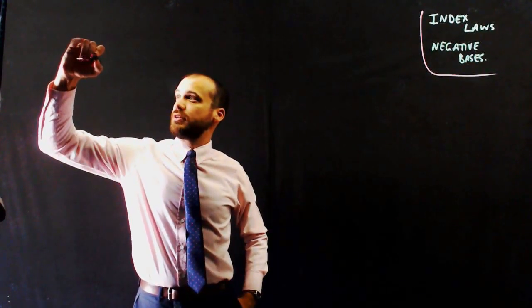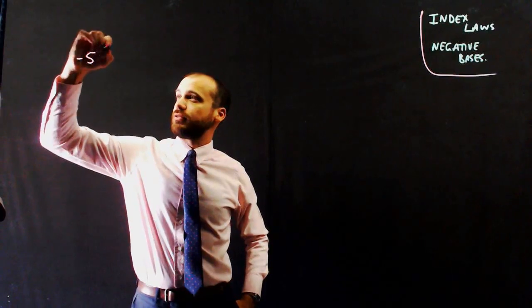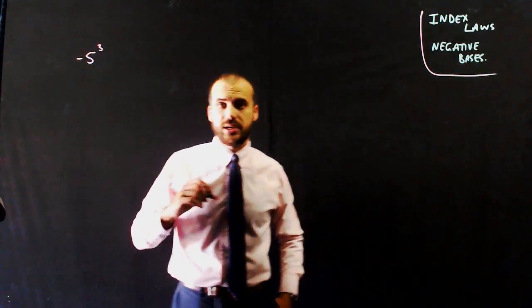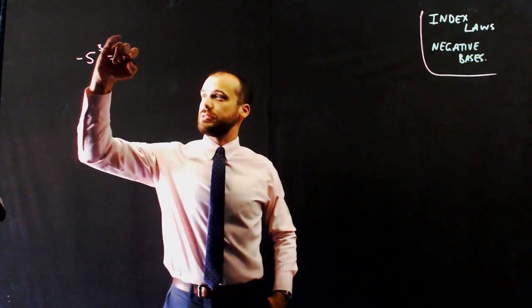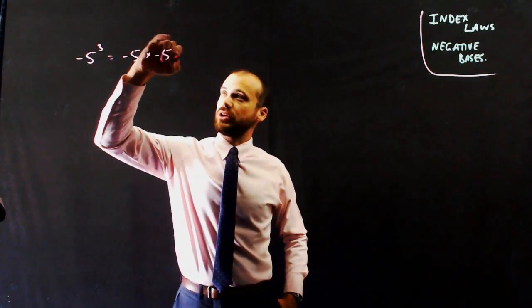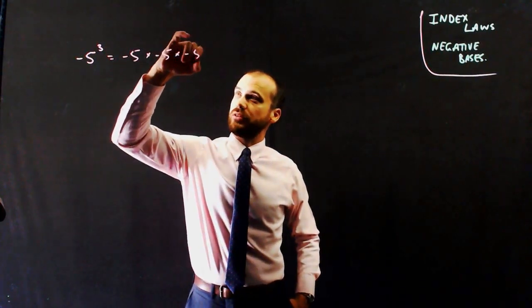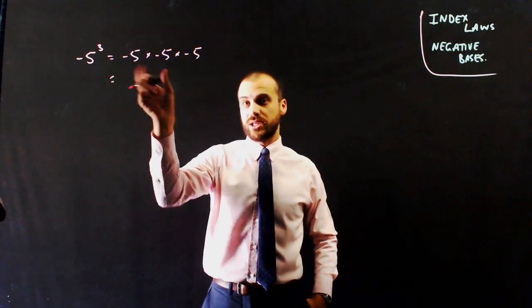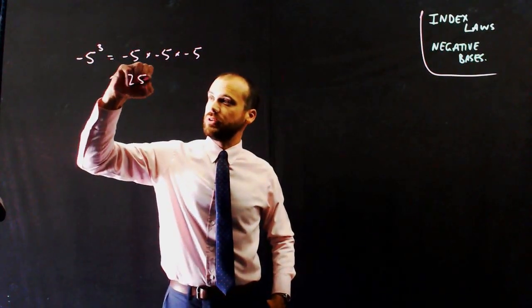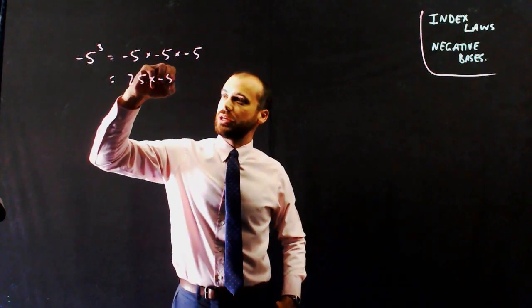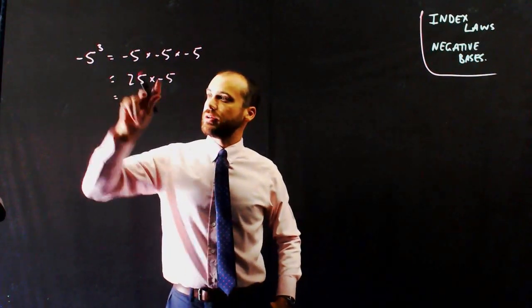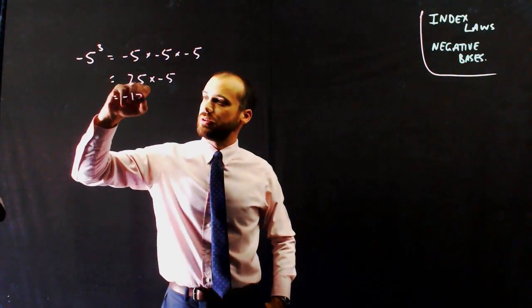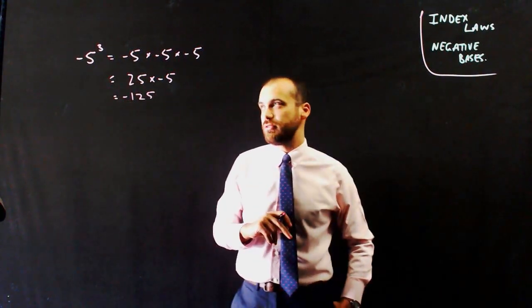If I've got negative 5 to the power of 3, that's the same as negative 5 times negative 5 times negative 5. Negative 5 times negative 5 — a negative times a negative is a positive — so that's 25, times negative 5. A negative times a positive is a negative: negative 125.